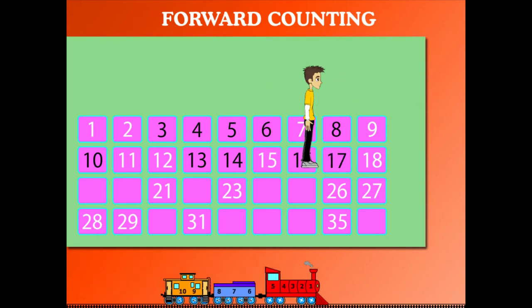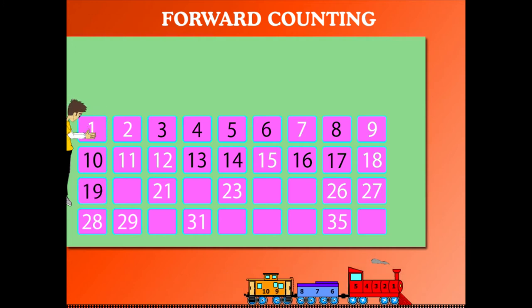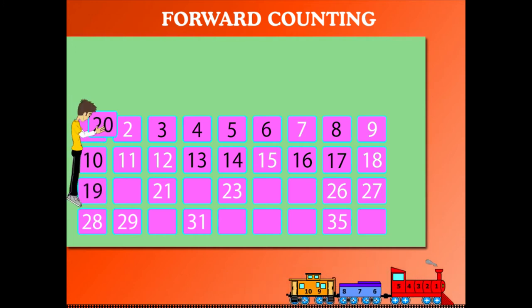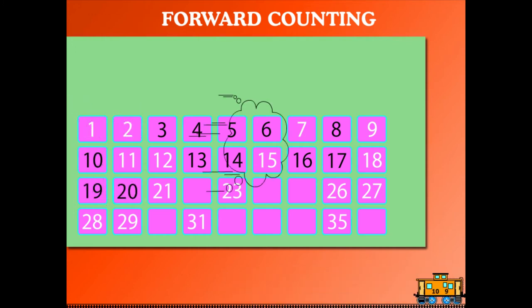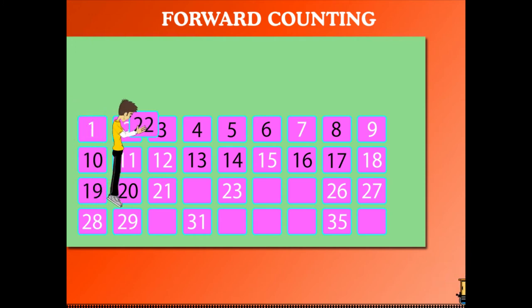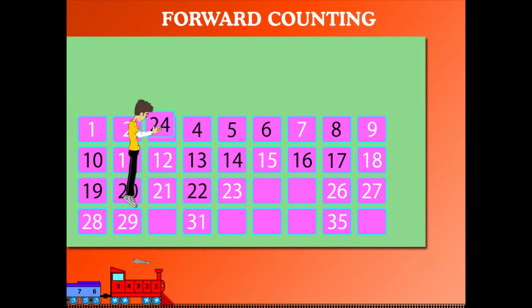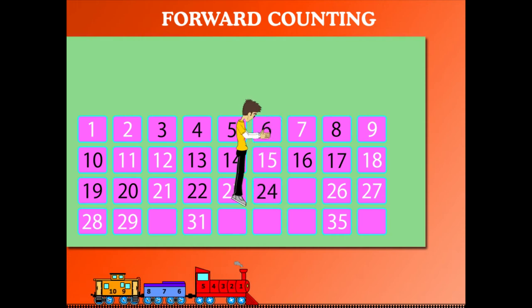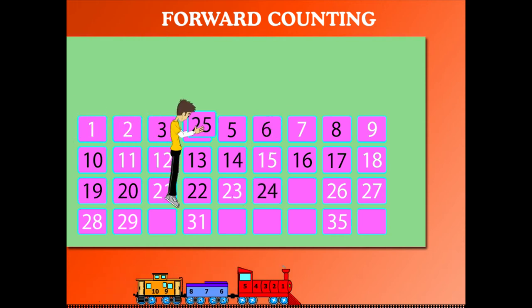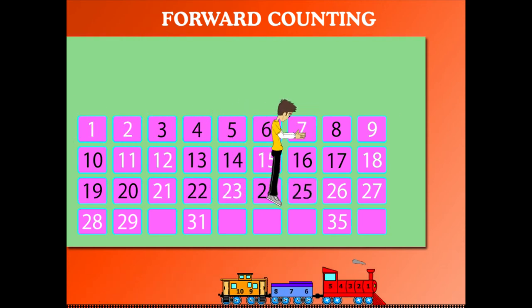After 18 is 19, then 20. After 21 is 22. After 23 is 24, then 25. Count forward.